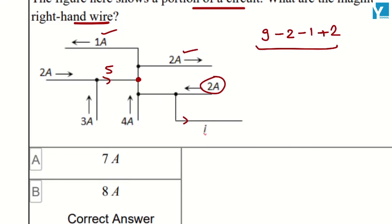So i will be 9 minus 2 minus 1 plus 2. That will be equal to 9 minus 1, which is 8 amperes. This is going to be our answer.